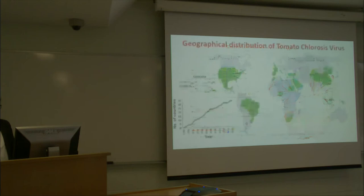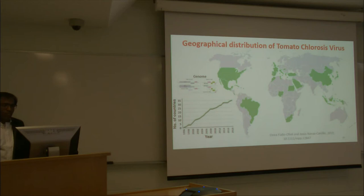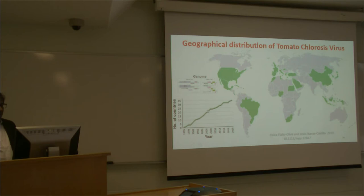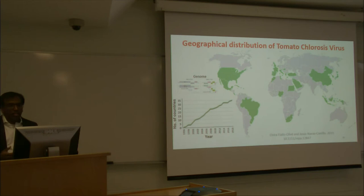When you look at the tomato chlorosis virus, this virus was first reported in the USA around 1995-1996. It's a whitefly-transmitted virus, as I just mentioned. From 1996 to 2008, the number of countries it has been reported in reached 35 countries so far. It also makes me wonder how this virus is spreading in terms of its vector biology.